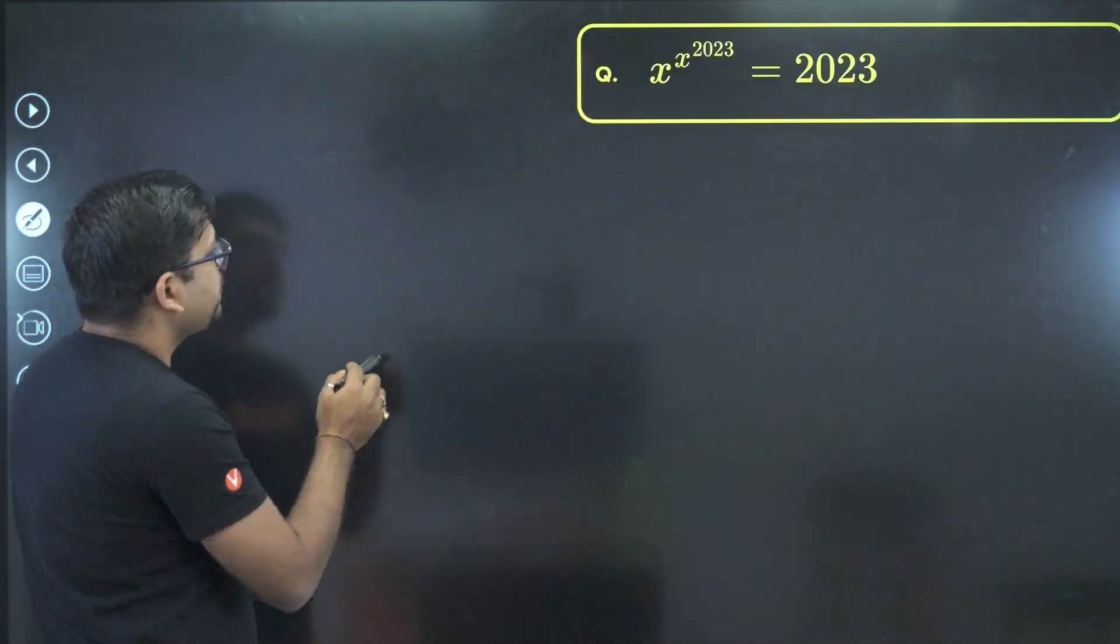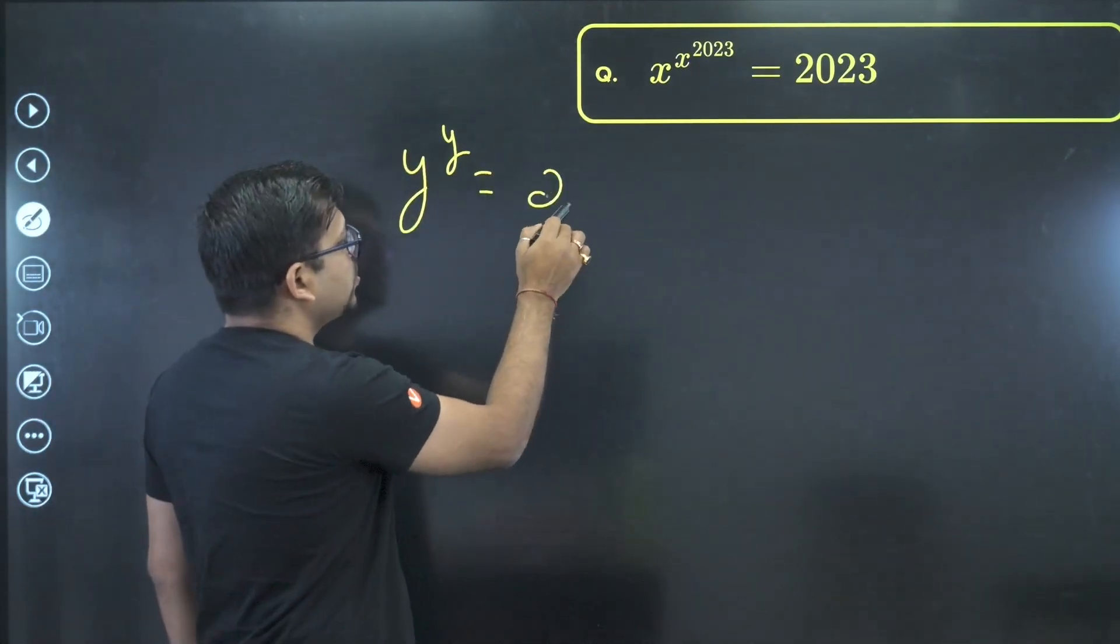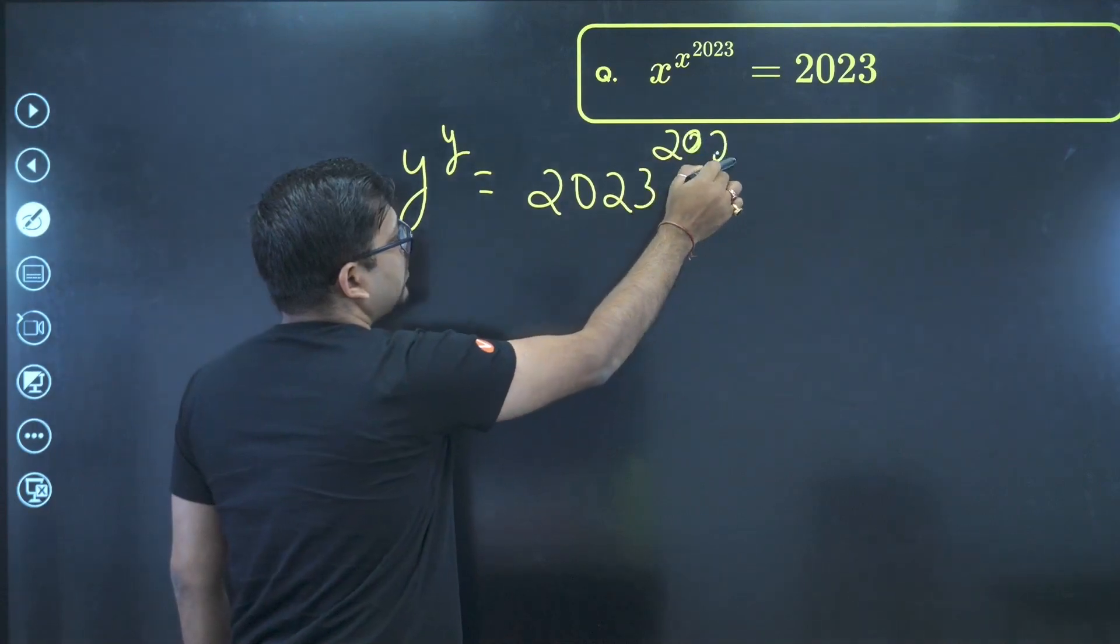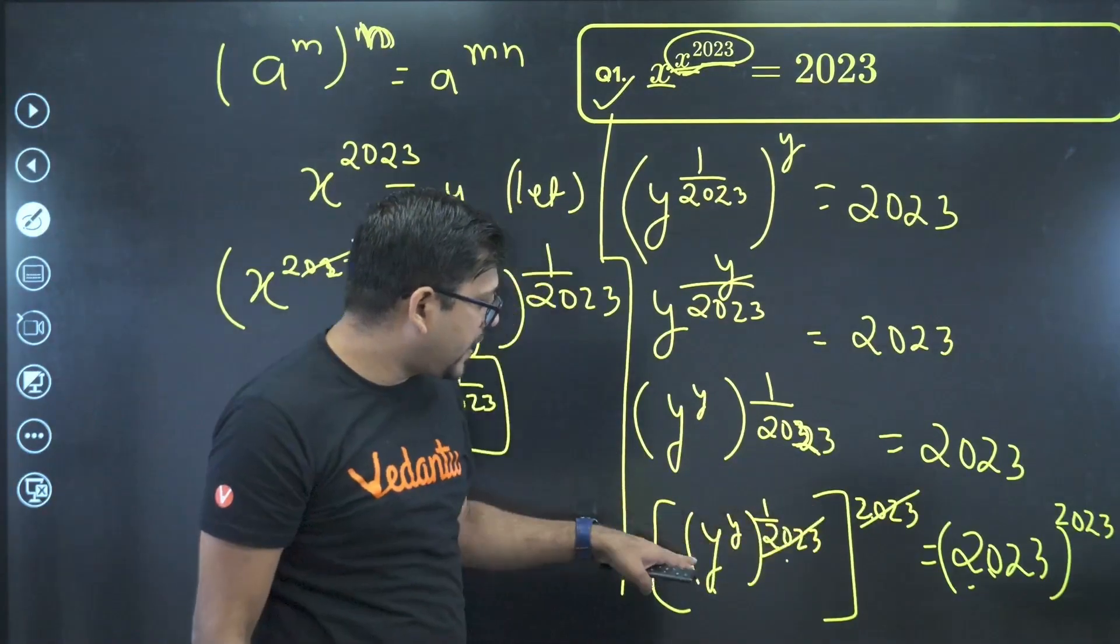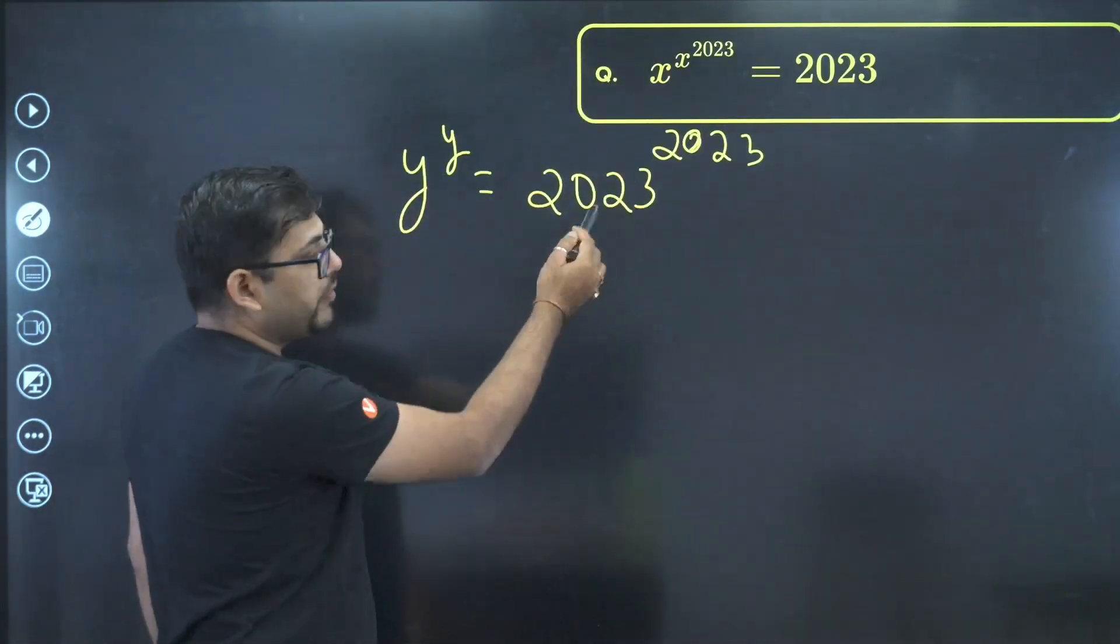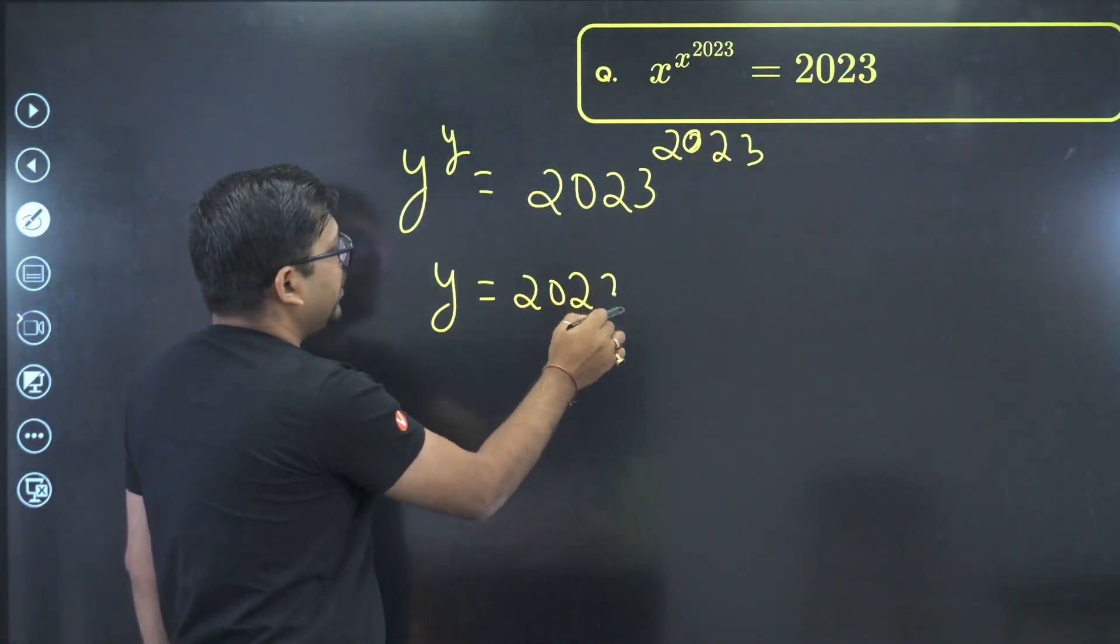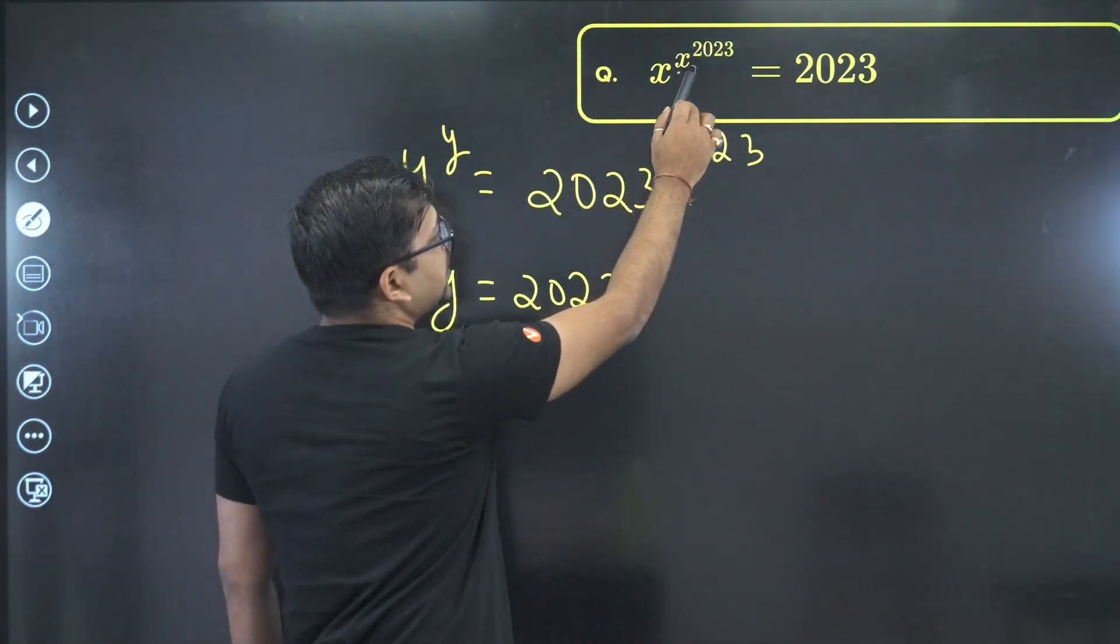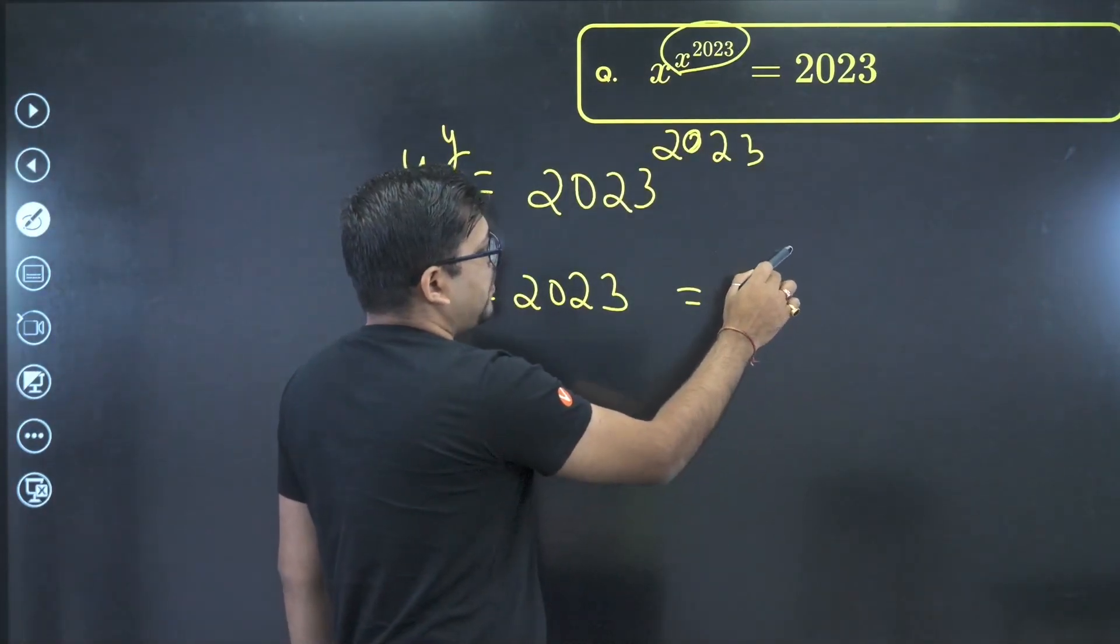So the answer is y raised to power y equals 2023 raised to power 2023. So we have got, this 2023 got cancelled. And hence y raised to power y equals 2023 power 2023. So finally, we can very easily say that y equals 2023. And now what was y? So if you do remember, we had assumed this entire thing to be y. So this is nothing but x raised to power 2023.